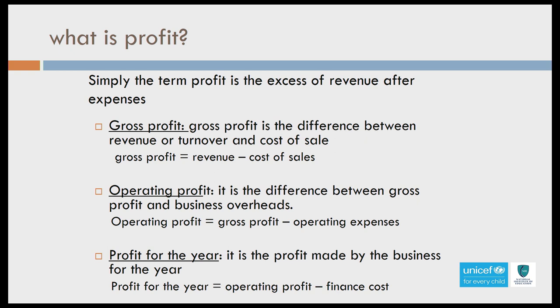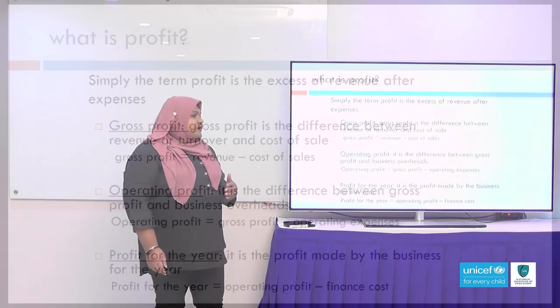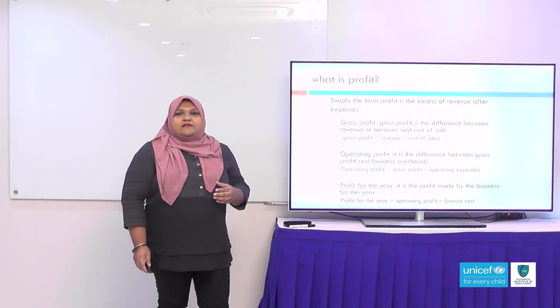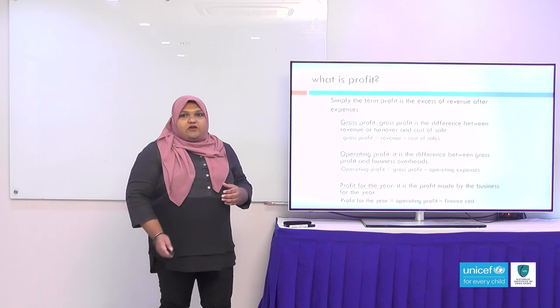The third type is profit for the year. It is the profit made by the business for the entire year — the remaining amount after all steps. The formula is: profit for the year equals operating profit minus finance cost.